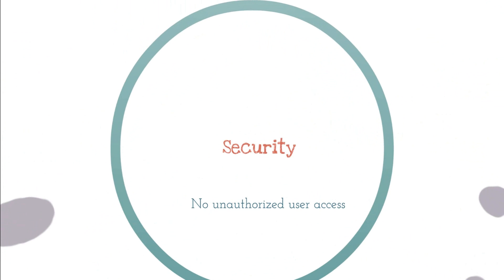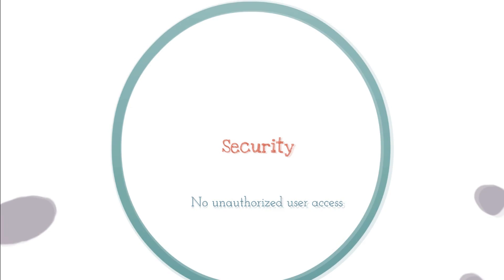Then there is security. In a file processing system, any user can access any part of the data, which is really risky since there are many leaks of data. DBMS provides really good security, which is controlled by the database administrator and the database manager. Database security means no user without authorization or permission can access the data. The database administrator is the one to grant or revoke privileges so users can access the data. A particular user can also be restricted to only some part of the database, not all of it.